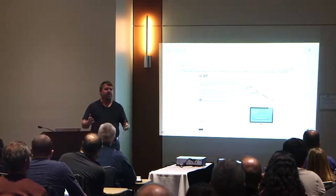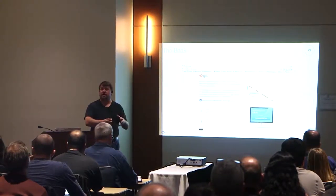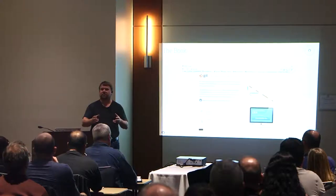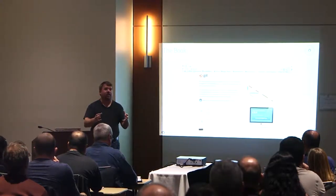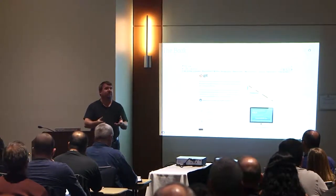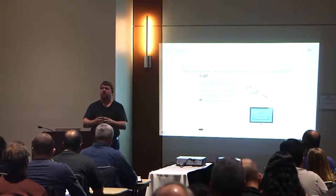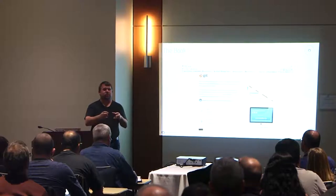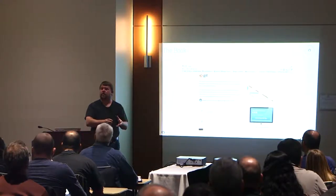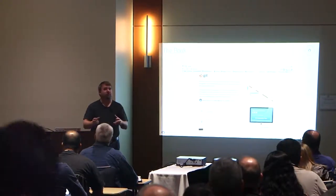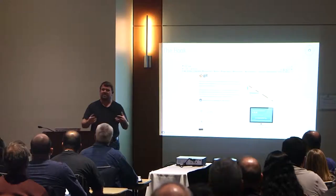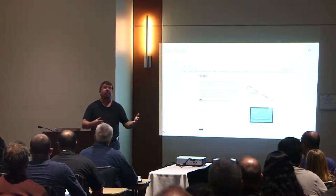What distributed version control means is I can actually work locally on my machine and make all kinds of changes without having to commit them back to a central repository. When I have a set of code I'm ready to share, I do what's called a push, and that's when everybody else can see my changes. Because people have their own mini version control system on their machine, they get to experiment a lot more — it's easy to create commits, do a revert, and undo a change.